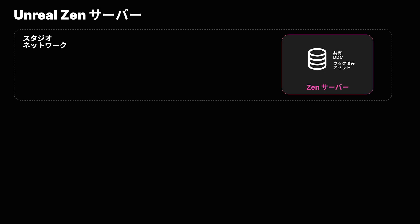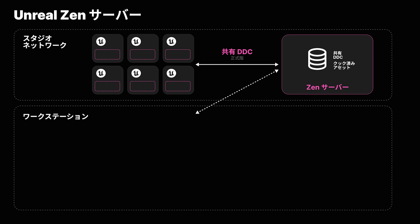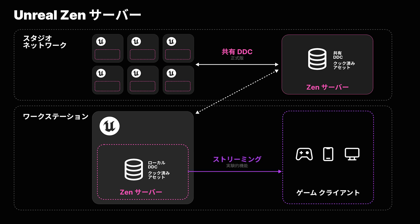Finally, this release sees many dev iteration tools reach production readiness, including Unreal Zen Server for deployment as a shared derived data cache, Unreal Zen Loader, Unreal Build Accelerator, and Unreal Horde. Meanwhile, an experimental new feature means that Zen Server can now stream cooked data to target platforms from console to mobile.